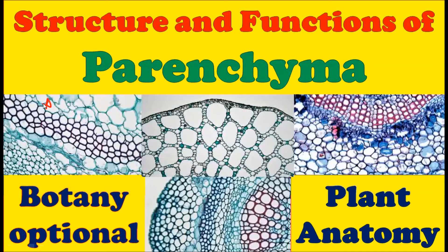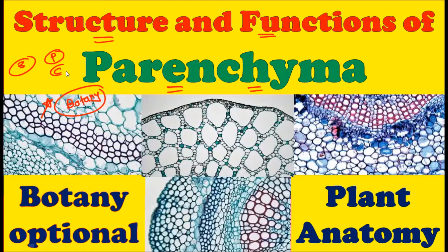Hello everyone. Welcome to the Botany Option channel for UPSC examination. In this video we are going to see the structure and function of parenchymatous tissue. As you know, plant anatomy forms an important part of every syllabus relating to botany. There are three types of simple permanent tissue in the plant kingdom: parenchyma, collenchyma, and sclerenchyma. In this video we will focus on the structure and function of parenchymatous tissue.